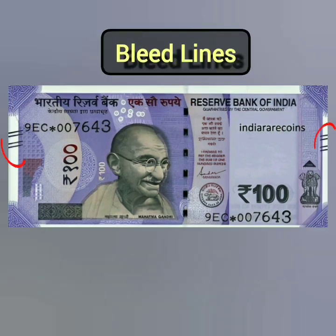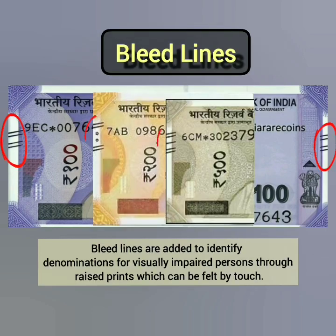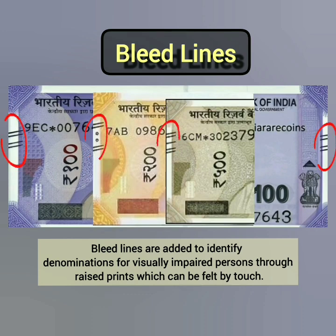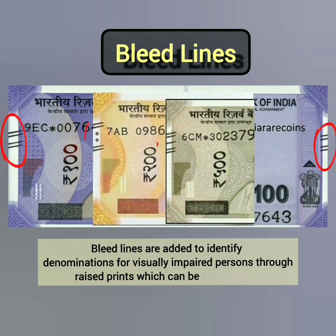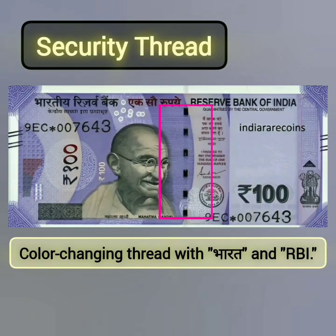Bleed lines are added to identify denominations for visually impaired persons through raised prints which can be felt by touch. Security thread: a colour-changing thread with 'Bharat' and 'RBI' inscribed.